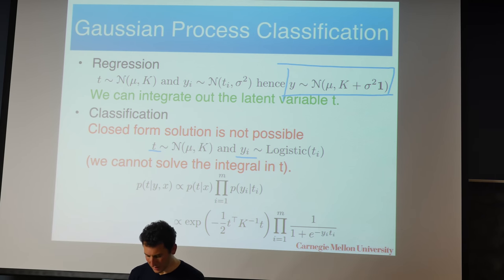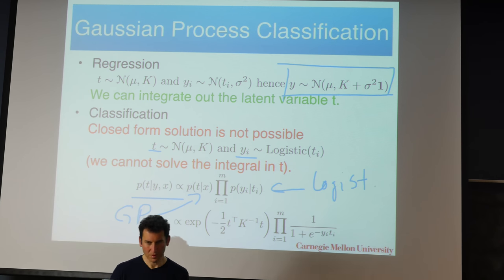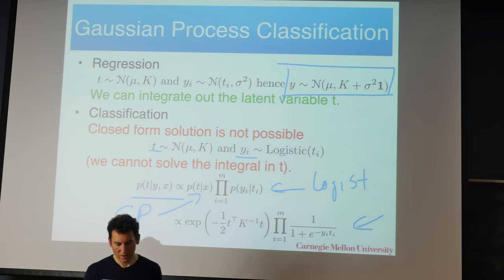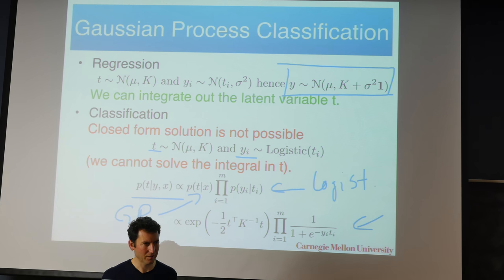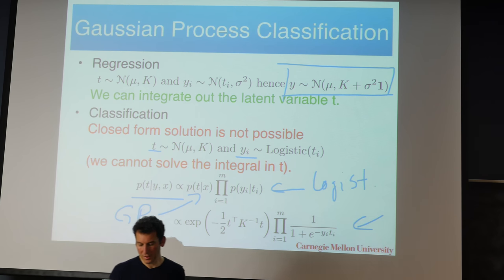All we can do is look at a posterior distribution. By Bayes' rule, we can get P of T given y and x, which is just P of T given x — from our Gaussian process — times all the P of y_i given t_i's from our logistic link function. What we can then do is maximize to find the mode of P of T given x and y. Quick question: why is mode finding here not such a terrible idea?